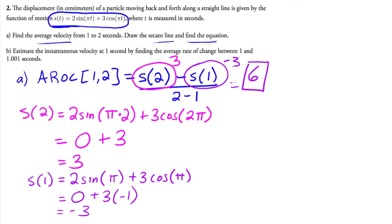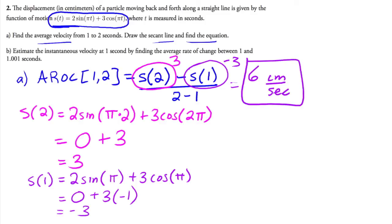So we get 3 minus (-3) = 6 over 1, which equals 6. The average velocity is 6 centimeters per second — T is in seconds and the displacement is in centimeters, so the units are centimeters per second. That's how fast our little particle is going.